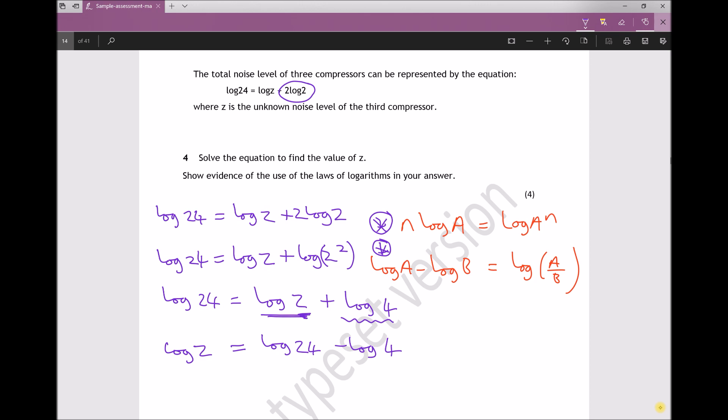That means we can rewrite this as logZ = log(24/4).